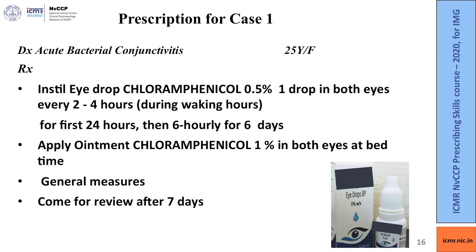Now let us prescribe for our first case — a 25-year-old lady with acute bacterial conjunctivitis. Chloramphenicol is a good choice in such a patient. We can prescribe eye drops chloramphenicol 0.5%, one drop to be instilled in both eyes every 2 to 4 hours during waking hours for the first 24 hours, and then 6-hourly for 6 days, making this a total of 7 days. Chloramphenicol is a broad spectrum topical antibiotic and one of the least toxic to the epithelium amongst all topical antibiotics. At night the patient can be advised to apply ointment chloramphenicol 1% in both eyes. Do not forget to advise general measures and call the patient back for review after 7 days.